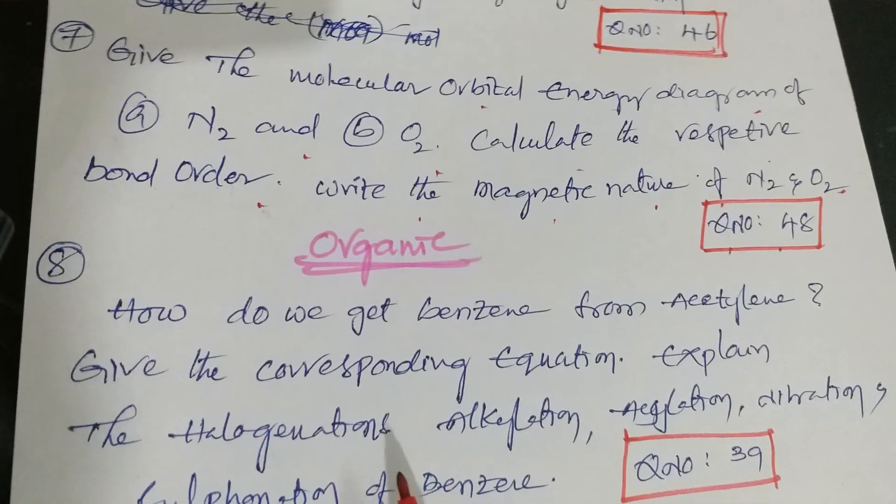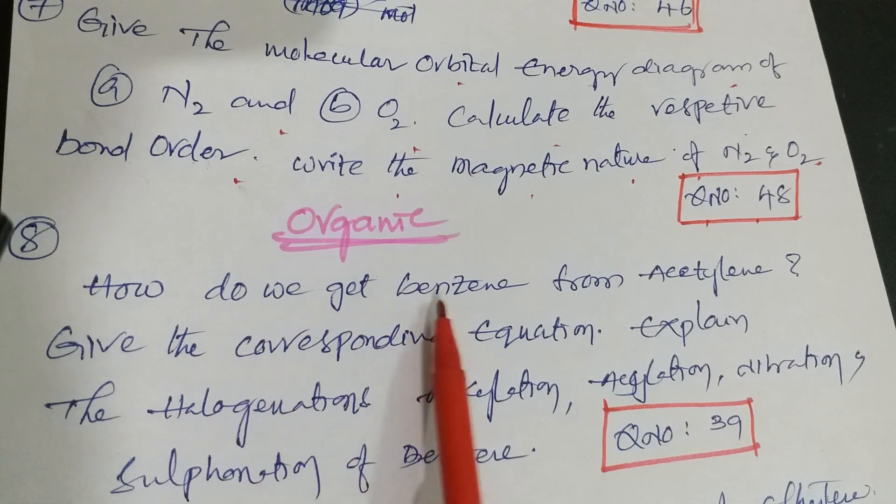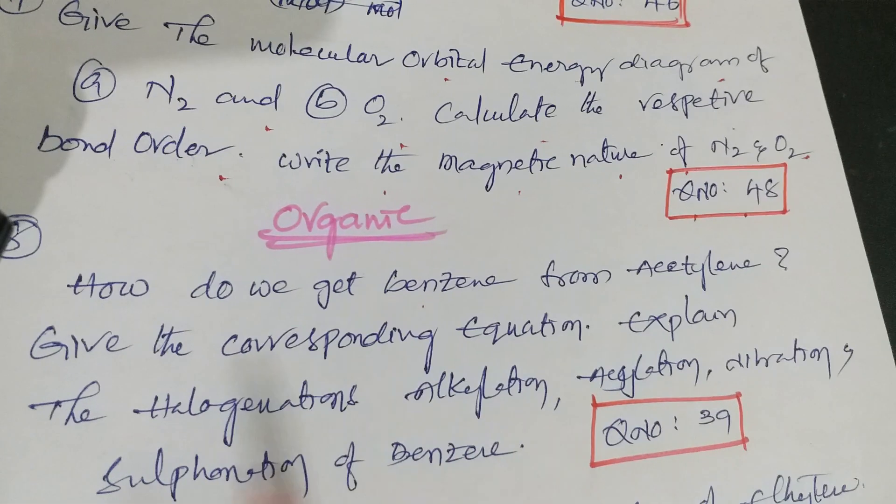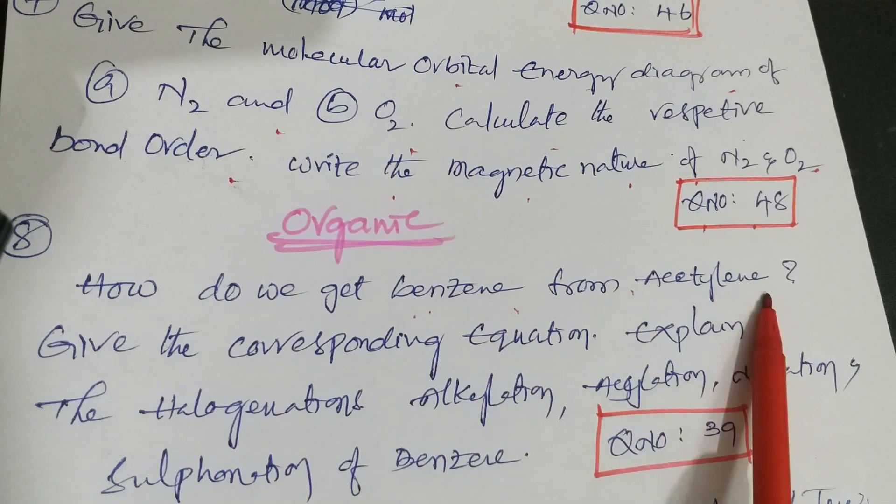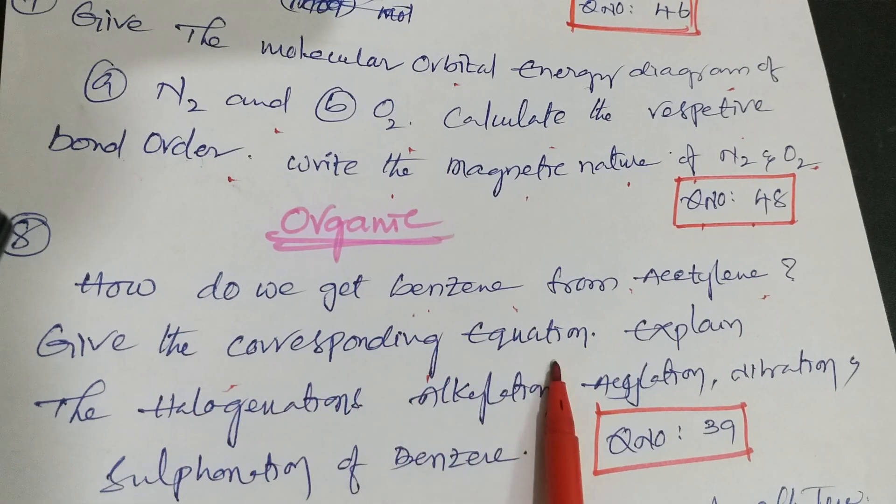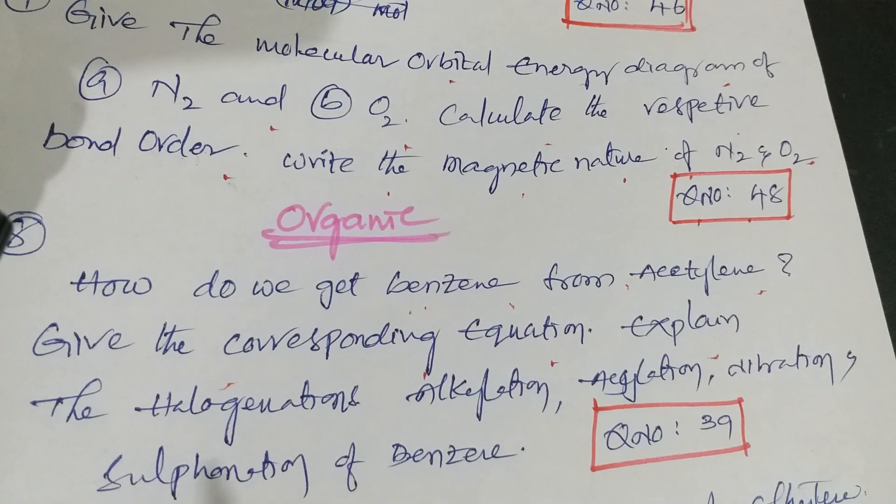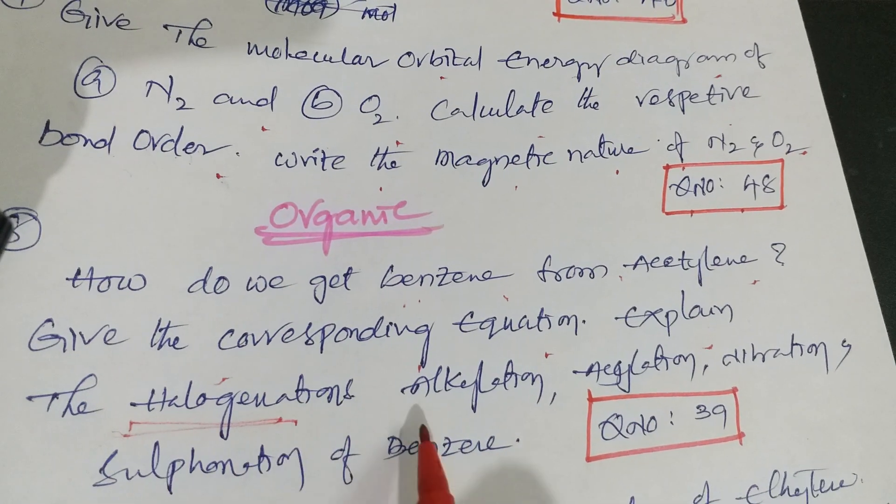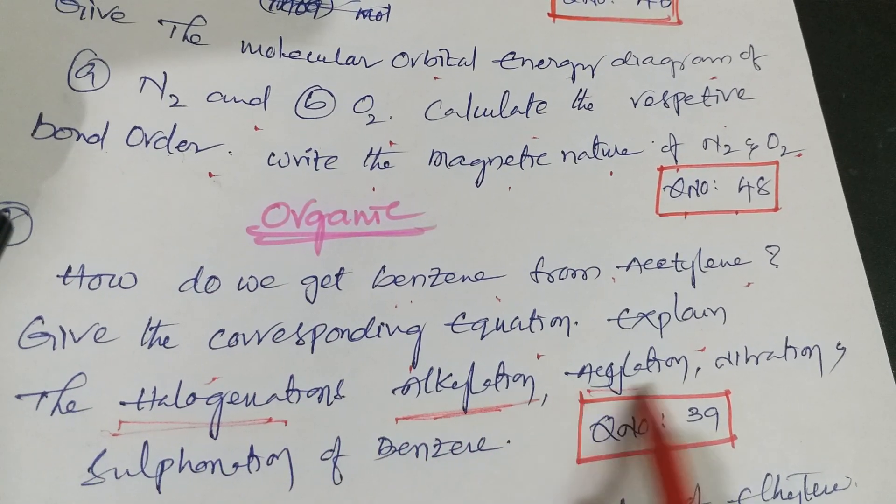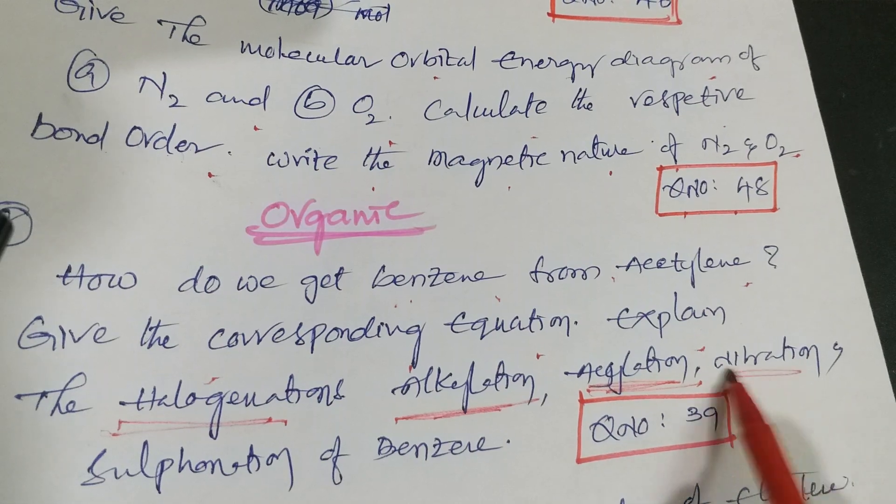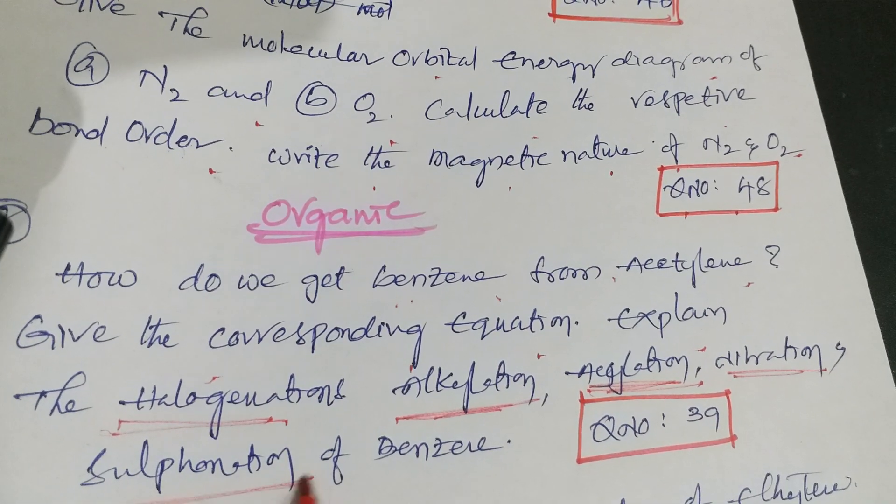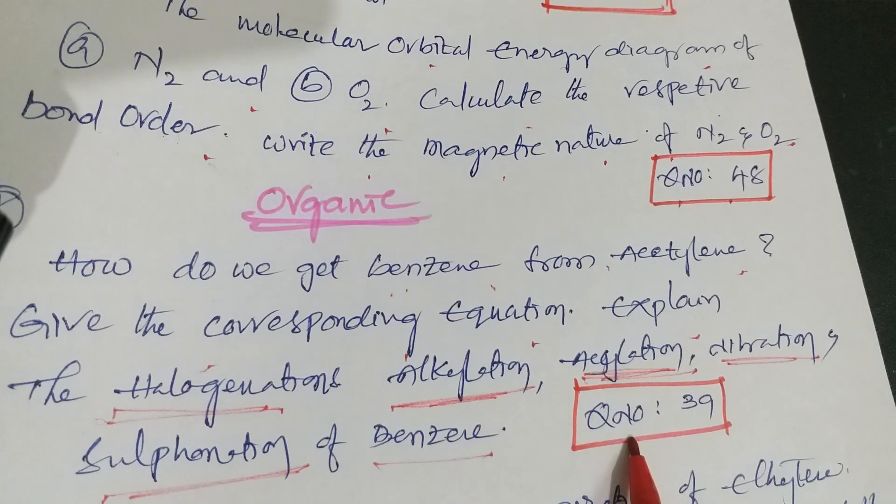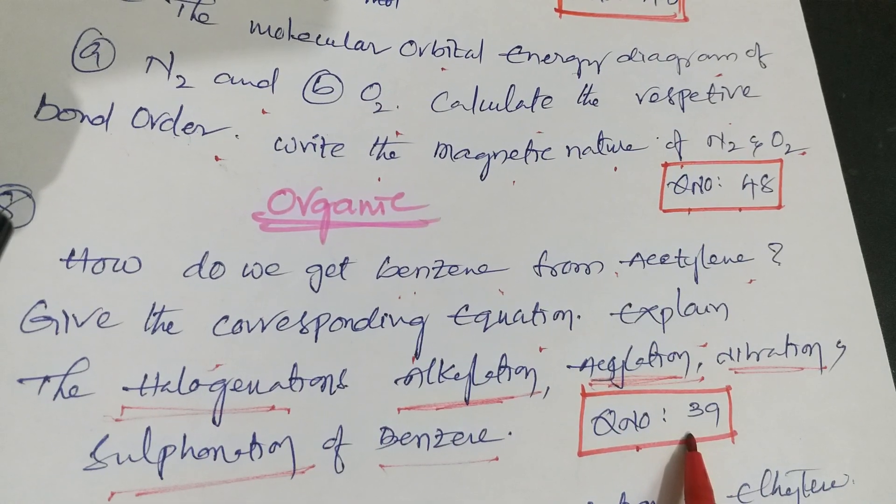Next one from organic chemistry. How do we get benzene from acetylene? Give the corresponding equation. Explain the first one halogenation, second one alkylation, then acylation, nitration, and sulfonation of benzene. That is question number 39 from Telangana Academy textbook.